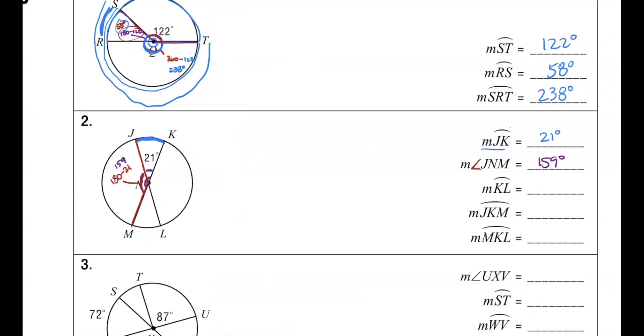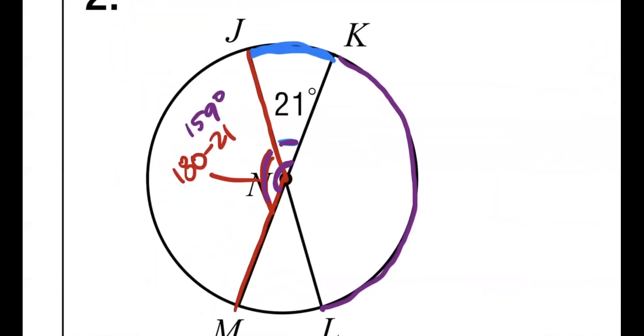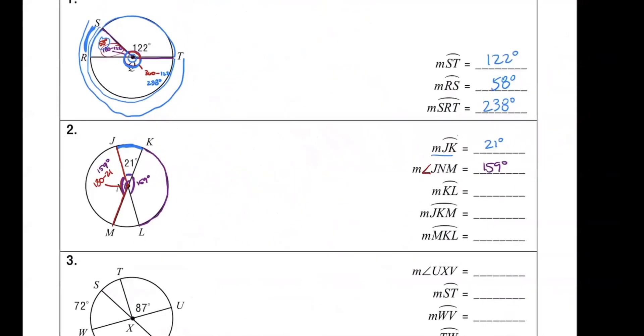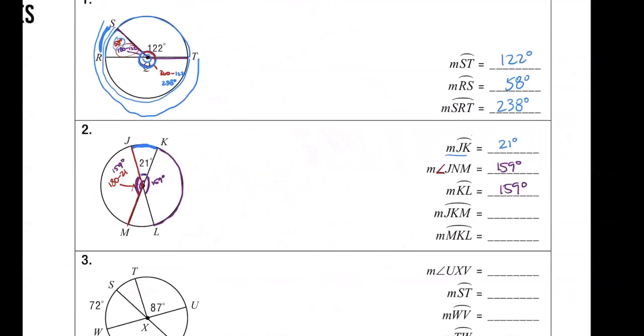All right, next, the measure of arc K-L. So, they want to know from here to here. Well, if this is 159 degrees, what would this be? 159 degrees? Yes, very good, because it is a vertical angle. Good job. That means K-L would be 159. Guys, I'm so proud of you. After all of the stuff we're going through, you're not forgetting all of the stuff. Good job.